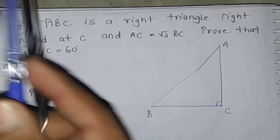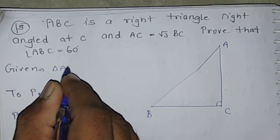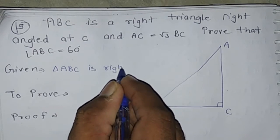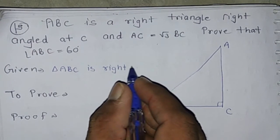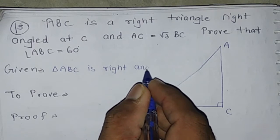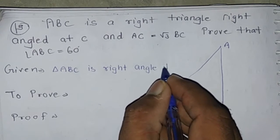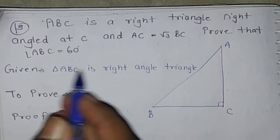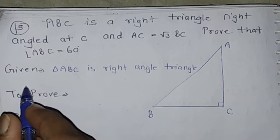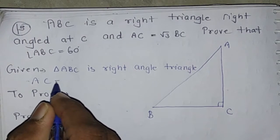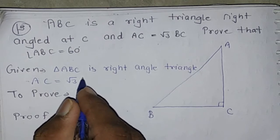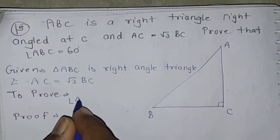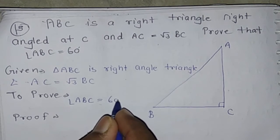Given triangle ABC is right angle triangle and AC equals root 3 BC. To prove angle ABC is 60 degrees.